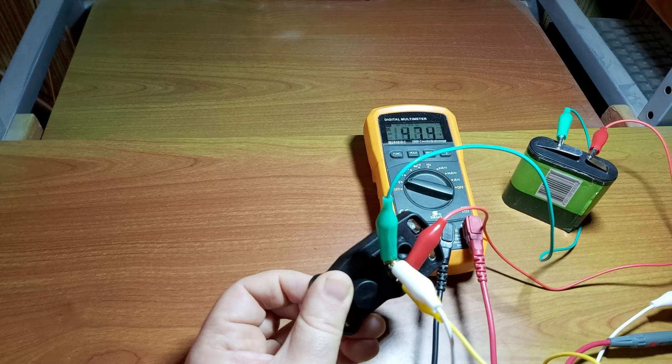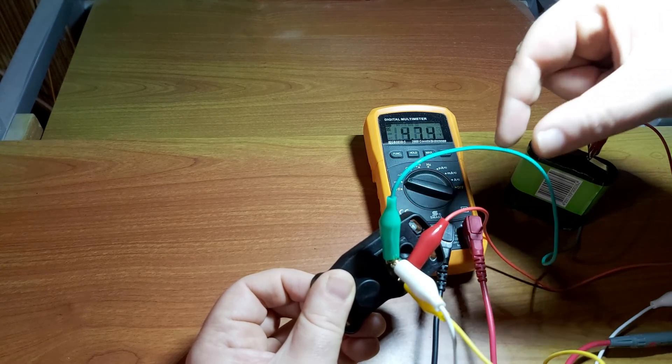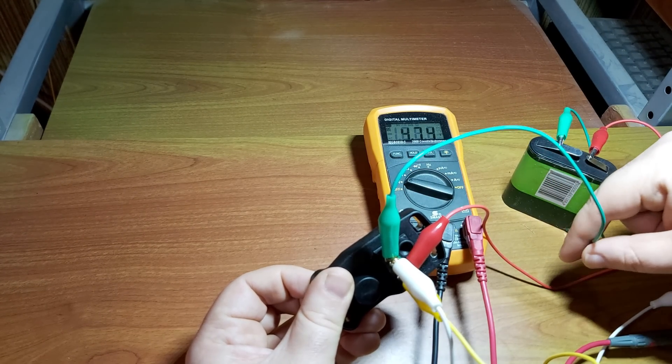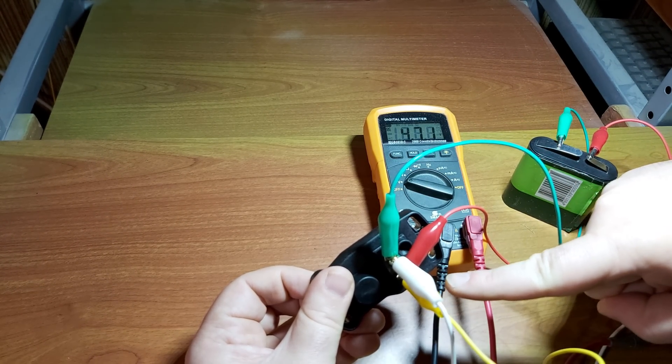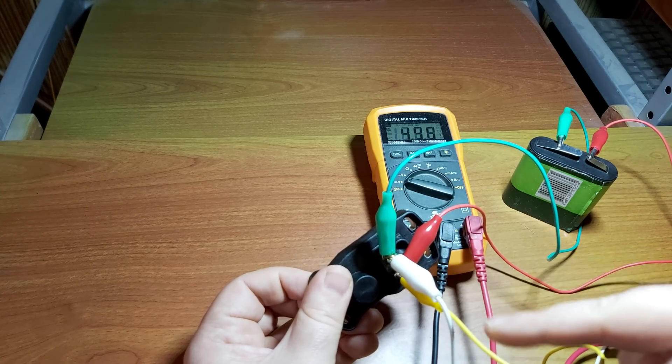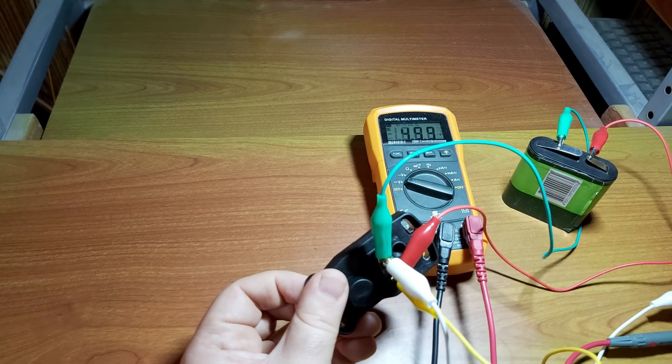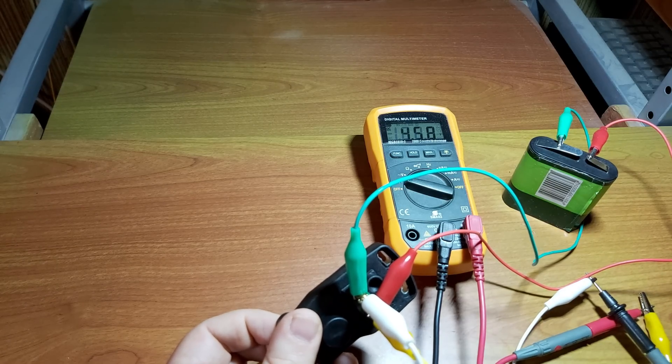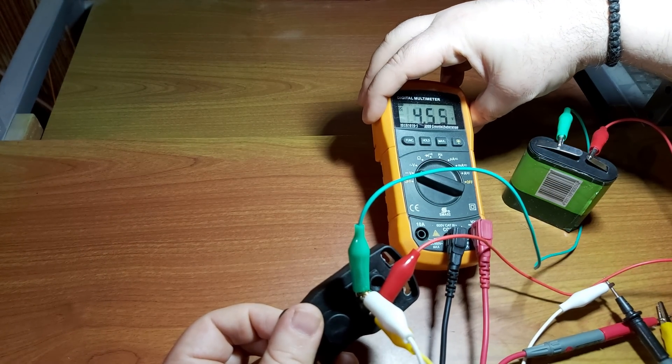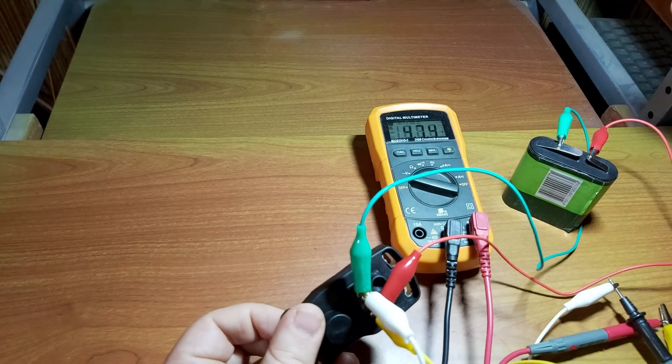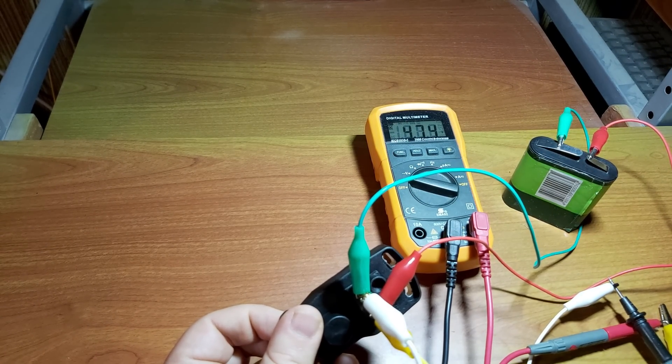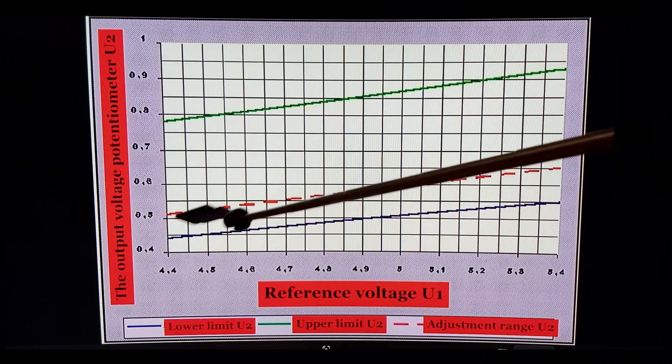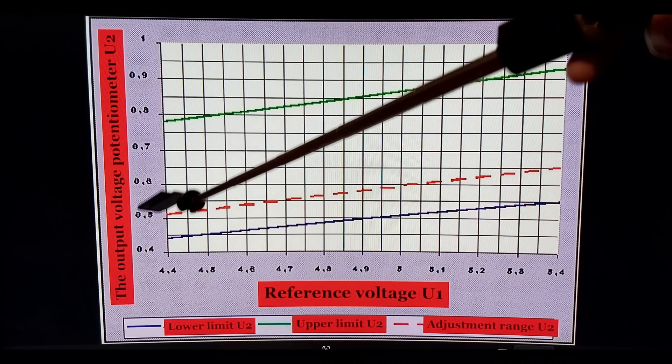As you can see, this is ground and this is voltage supply, the bottom one. With these two - ground and voltage supply - I connected them to the multimeter, and that's how I got the voltage. As simple as that.